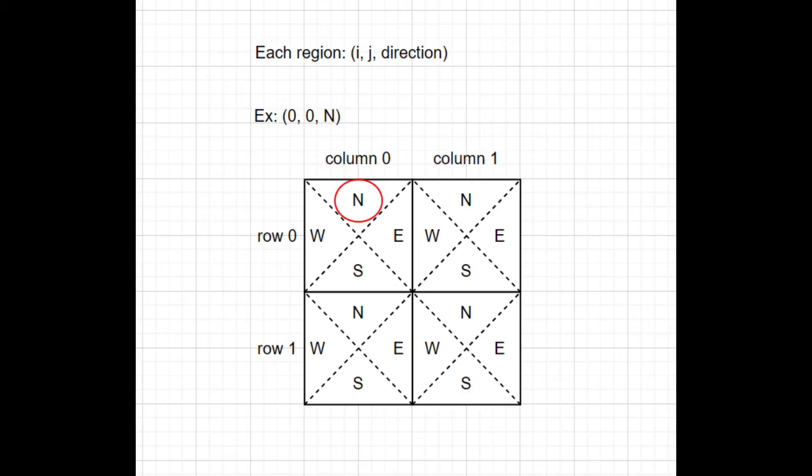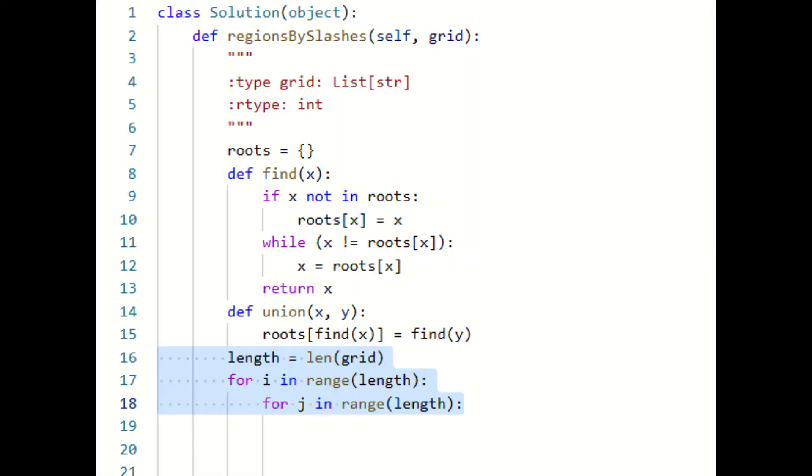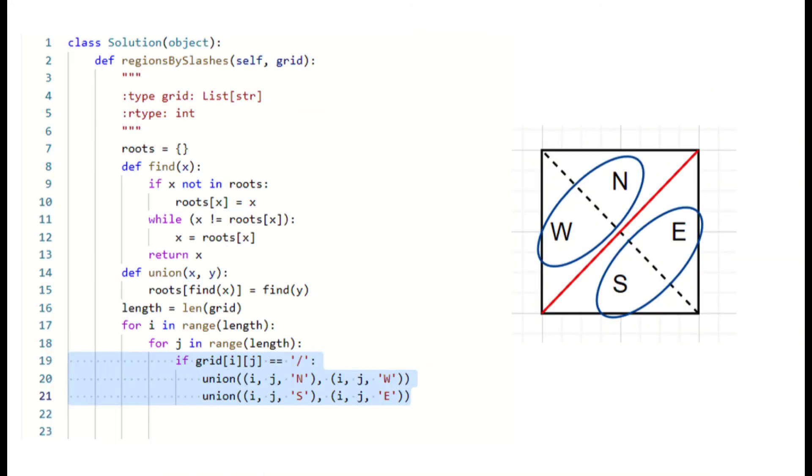We will denote each region with the tuple i, j, direction. For example, 0, 0, n represents the north region of the square on the first row and the first column. After that, we will iterate over the squares of the grid and use the union operation to merge the regions based on the characters given. For each square, if the character is slash, we connect the north region to the west region and connect the south region to the east region of the square.